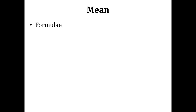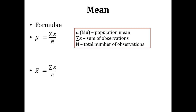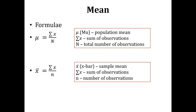The formula is the same whether calculating population mean or sample mean: the sum of observations divided by the total number of observations. When calculating the population mean, we write the total number of observations as capital N, and when we take observations from a sample, we write the number of observations as small n. This is the only difference; otherwise the calculation and formula are the same.